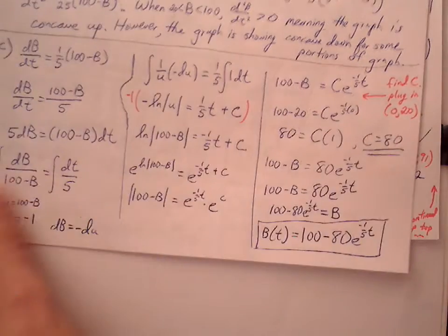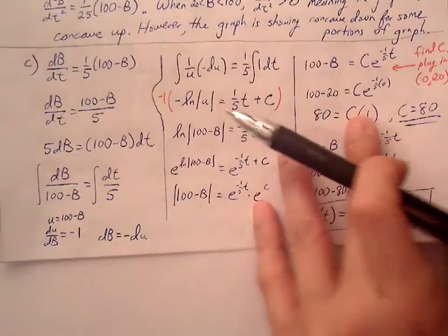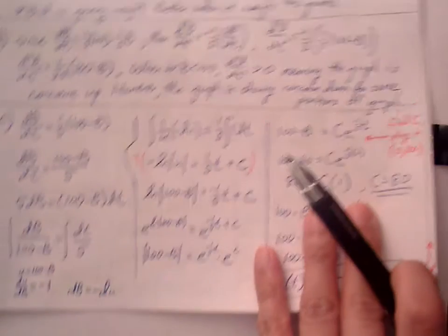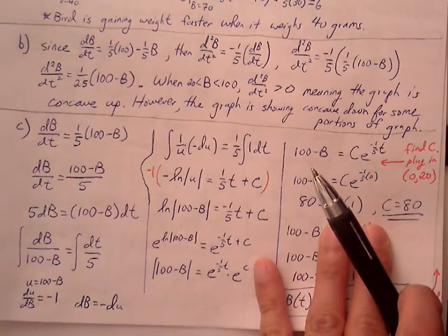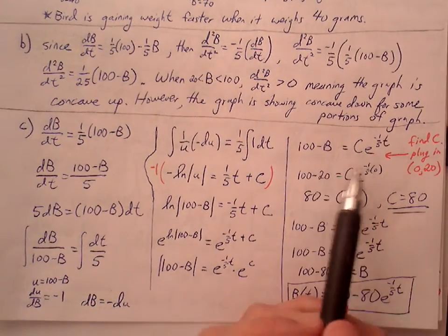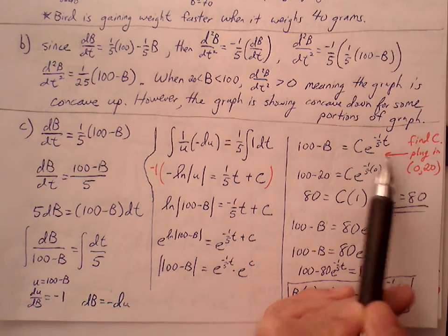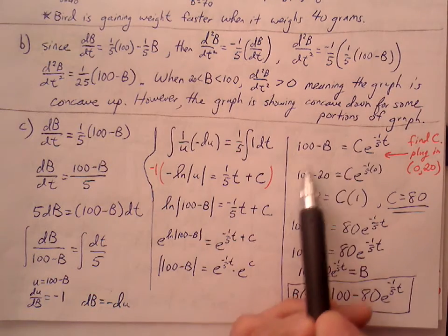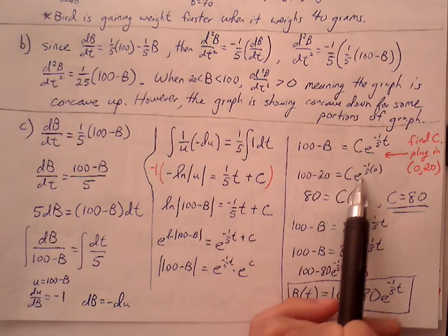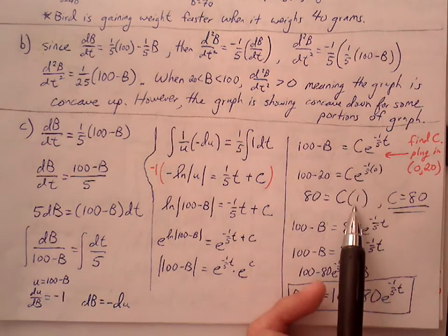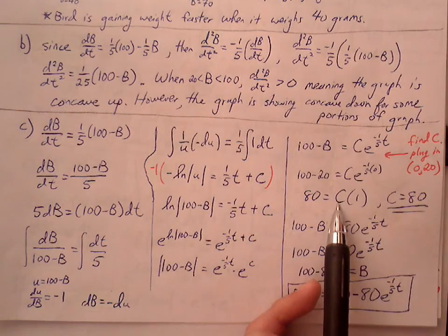We know we have to solve for C at some point, so I'm going to solve for C by plugging in my ordered pair that's provided in the beginning of part (c). So 0 plugs in for t, 20 plugs in for B. Once I do that, I get 100 minus 20 equals C e^0. e^0 is 1. If I solve for C, I get C equals 80.